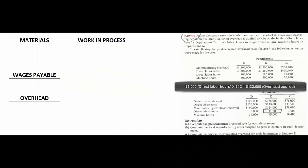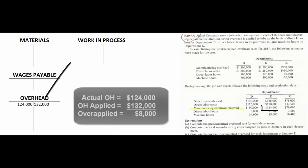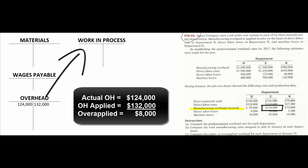Actual overhead incurred was $124,000, so we're $8,000 over-applied this month. Hopefully next month will be $8,000 under-applied. If we get to the end of the period with a large balance, we'll sprinkle some into work in process, some into finished goods, and some into cost of goods sold. If it's a small number, we'll just close it into cost of goods sold.